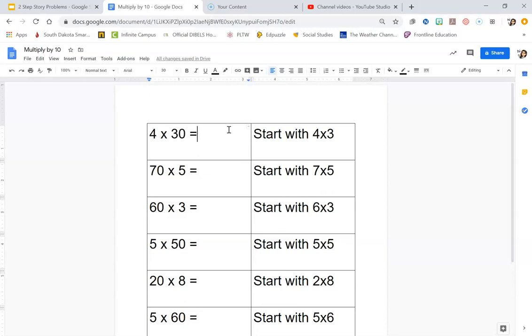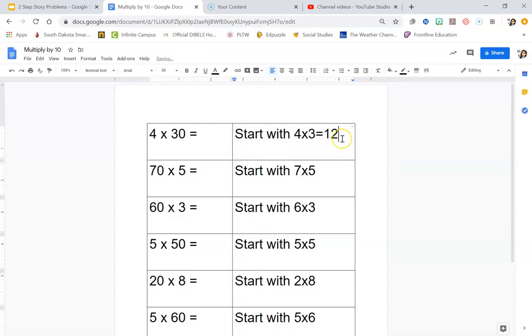But a trick that I'm going to teach you right now is whenever you multiply by a group of 10, then you're going to start with the single digits. So start with just 4 times 3, right? And I know that 4 times 3 equals 12. So I'm going to have 4 times 3 equals 12. I'm going to move this over here so it's all in one line.